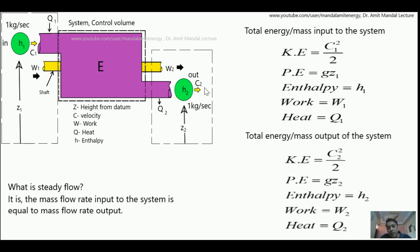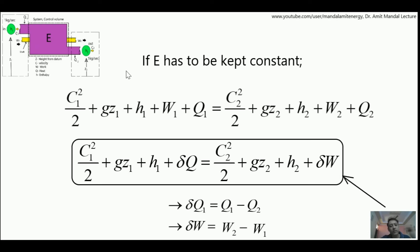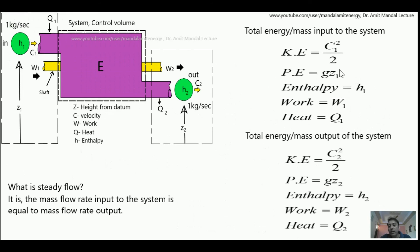Similarly at the output end, kinetic energy is C2²/2 since it comes out with velocity C2. Potential energy content is gZ2 since it is at height Z2. Work output by the right-hand shaft is W2, heat rejected is Q2, and enthalpy per unit mass is H2. This is the total energy per unit mass output of the system. Here is the crux of the derivation of the steady flow energy equation: if we want E — the energy content per unit mass of the control volume — to be constant, then total energy input must exactly equal total energy output.